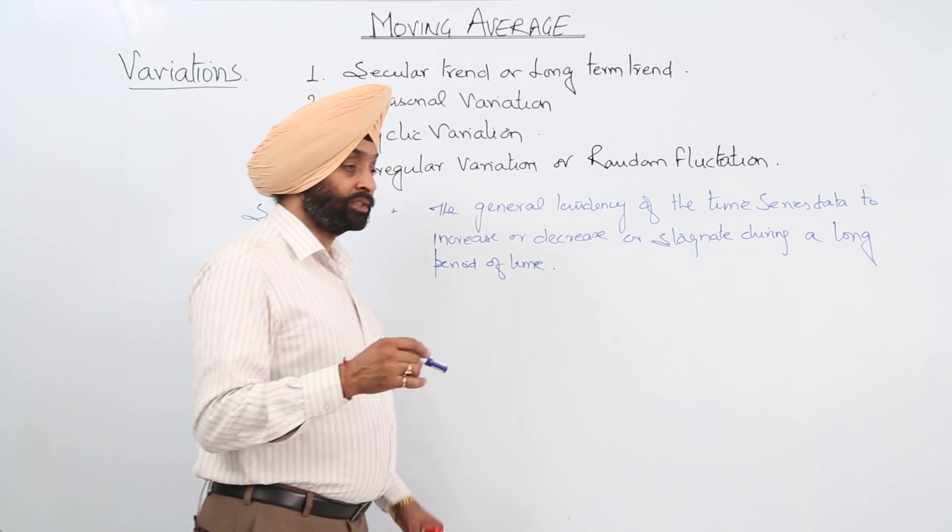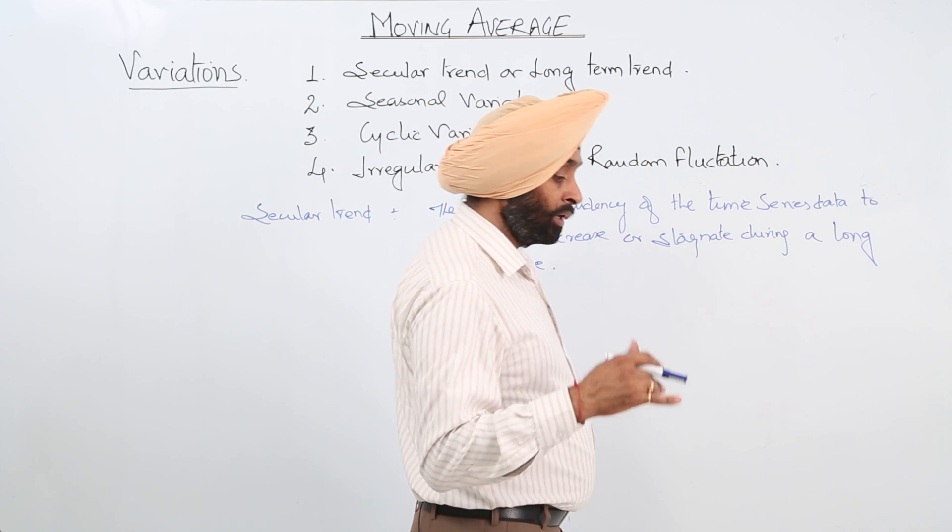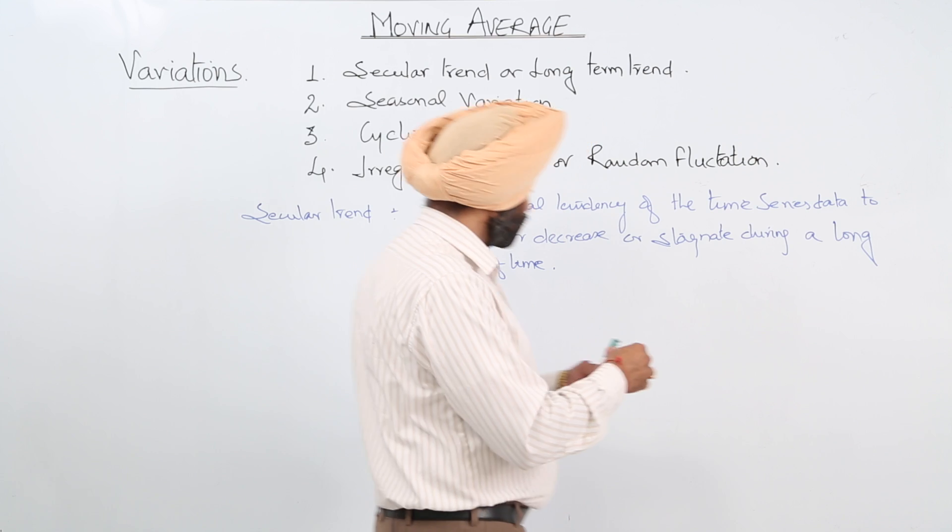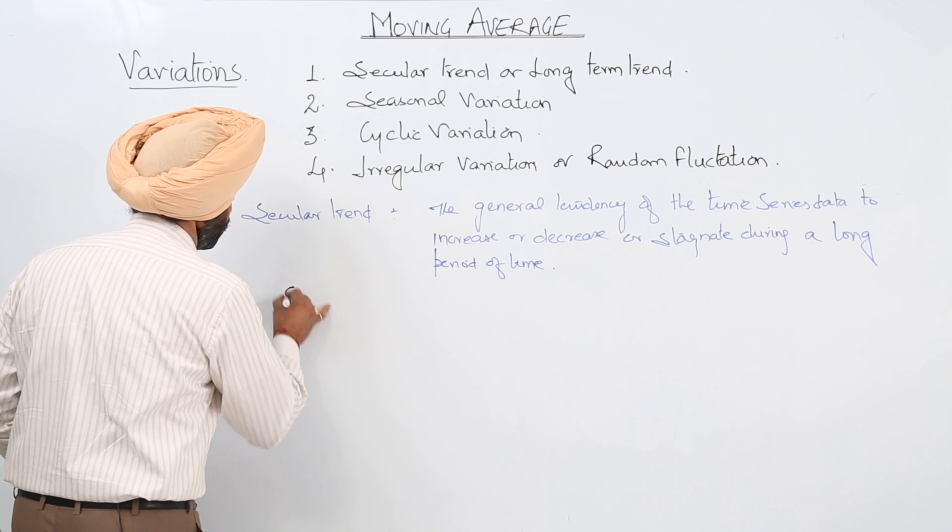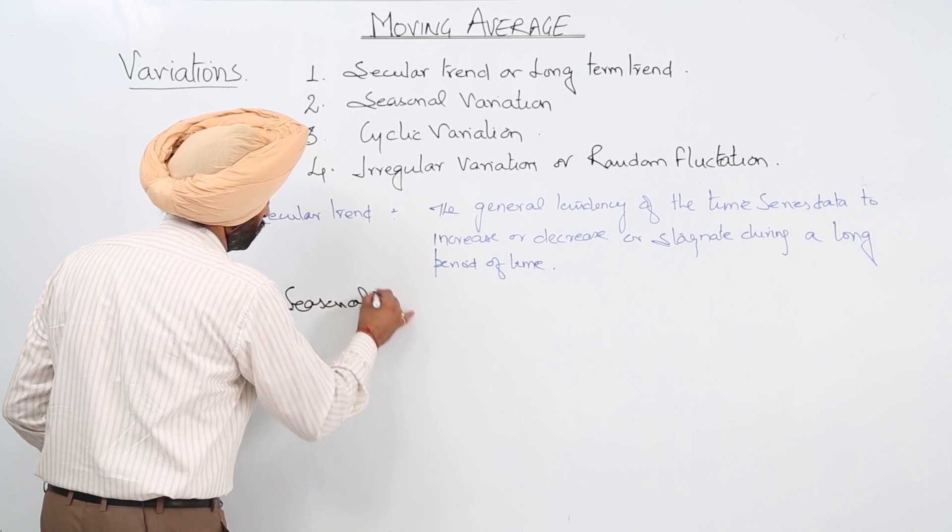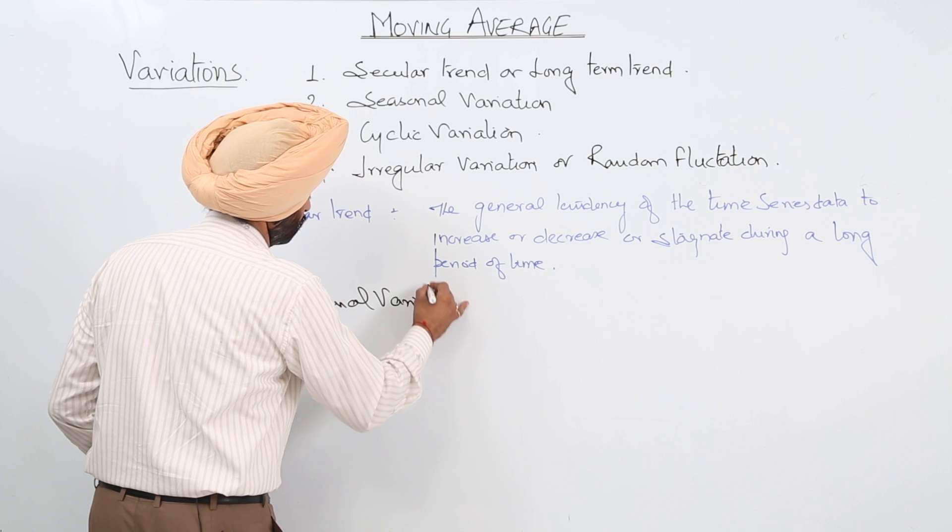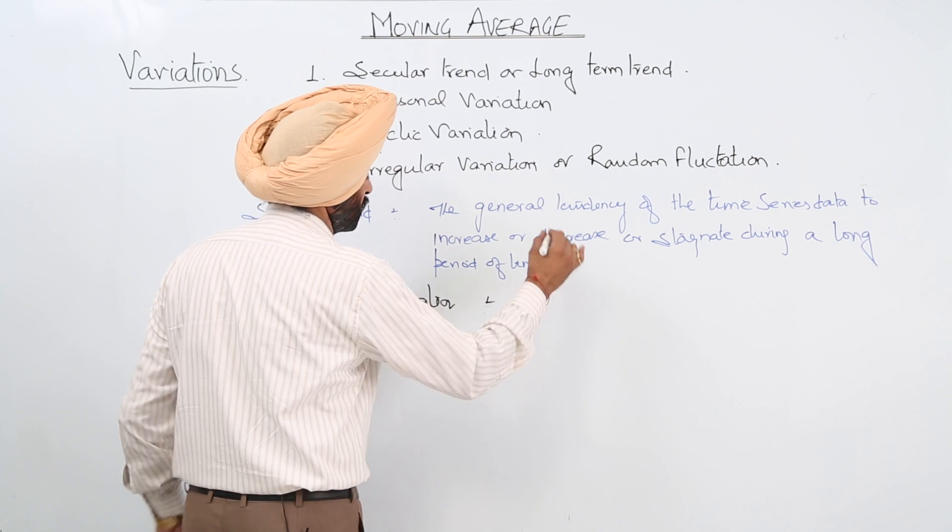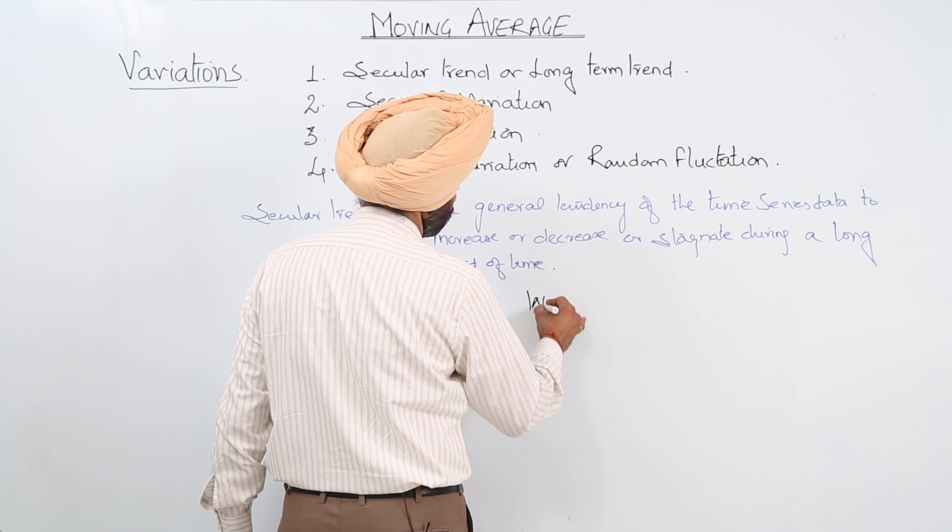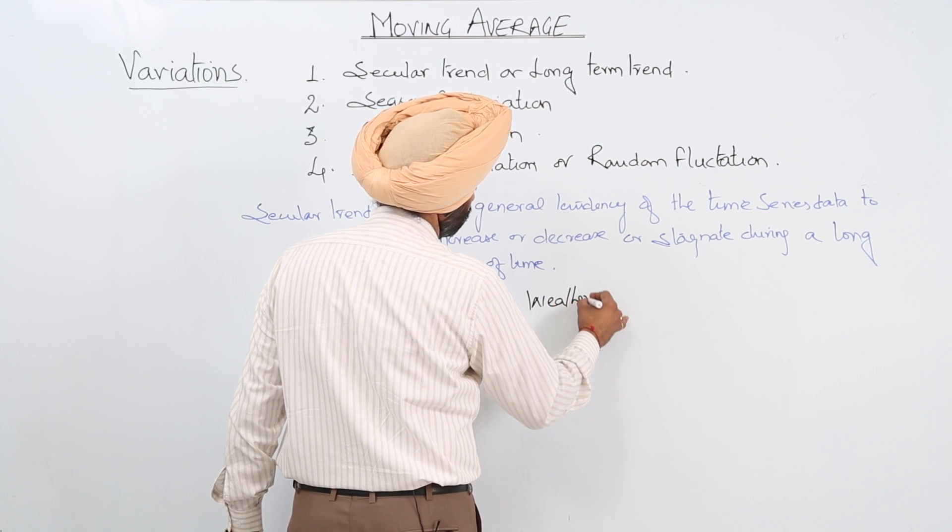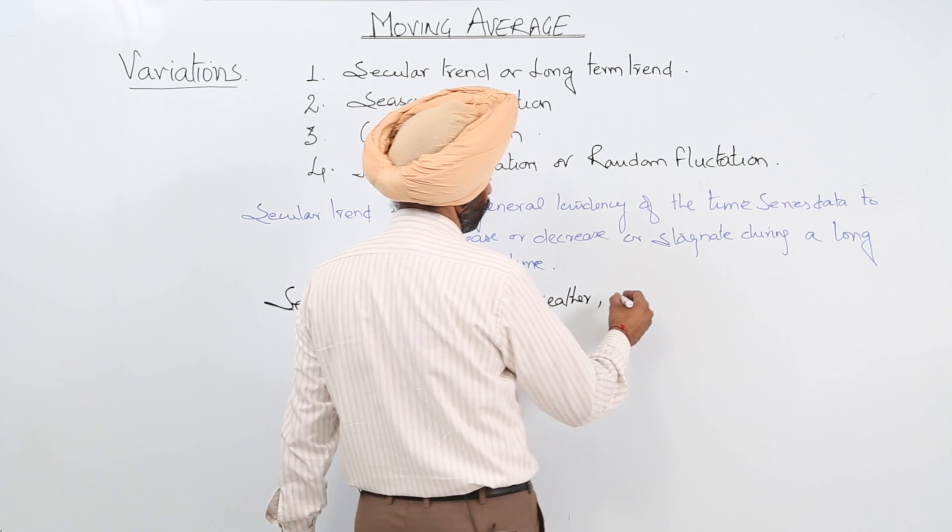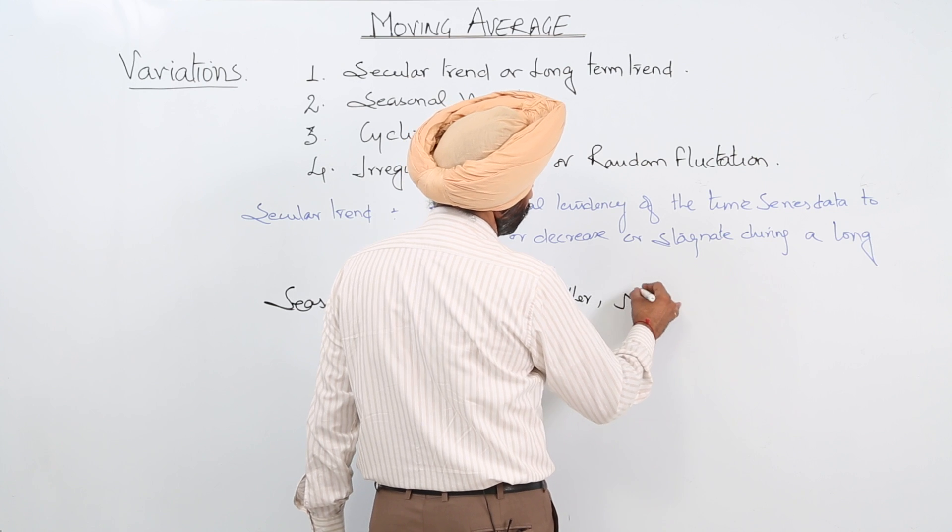Now for the seasonal variation, seasonal variation may occur on - now seasonal variation, what are the factors? Now the factors are weather, then after weather we get natural forces and social conditions.